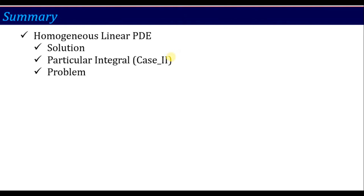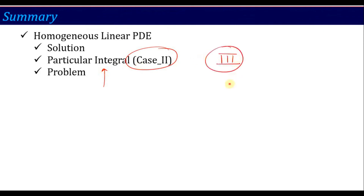In the next lecture we will discuss Case 3, called the general method. This is used when you cannot identify whether Case 1 or Case 2 applies, as a general approach to solve homogeneous linear partial differential equations. See you in the next lecture. Thank you.